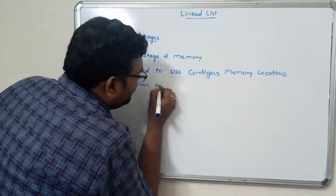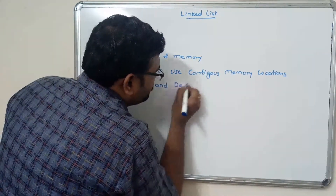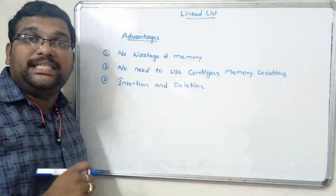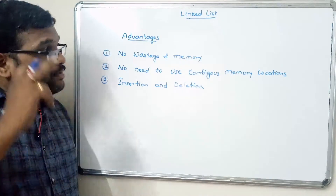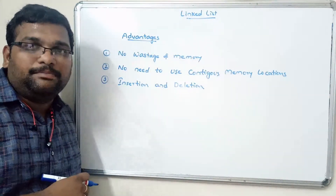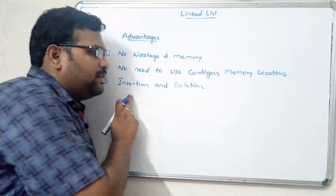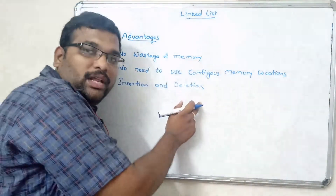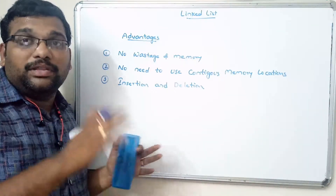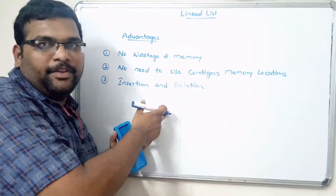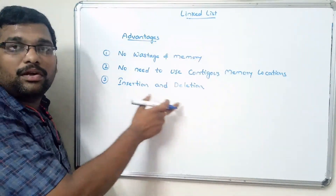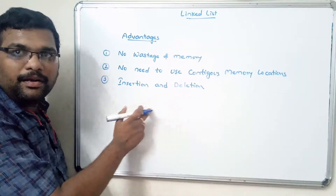The third advantage is that insertion and deletion become very simple. In arrays, inserting or deleting an element requires shifting index positions. In a linked list, that is not needed, so insertion and deletion are much simpler.